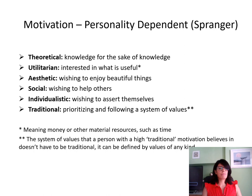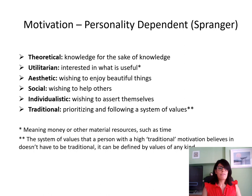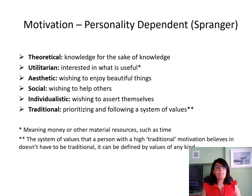Spranger gave us a theory based on the fact that motivating and leading people is very personality dependent. When you're leading a team, this style will look at individual personalities and lead them in accordance with those personalities. The first characteristic is theoretical — you are somebody who develops or seeks knowledge for the sake of having knowledge, motivated by the attainment of more knowledge. The next type of motivation is utilitarian — you are most interested in what is useful, such as earning more money and spending less time earning it. The next is aesthetic — you want to enjoy beautiful things, like a pretty office, a company car or the latest phone.